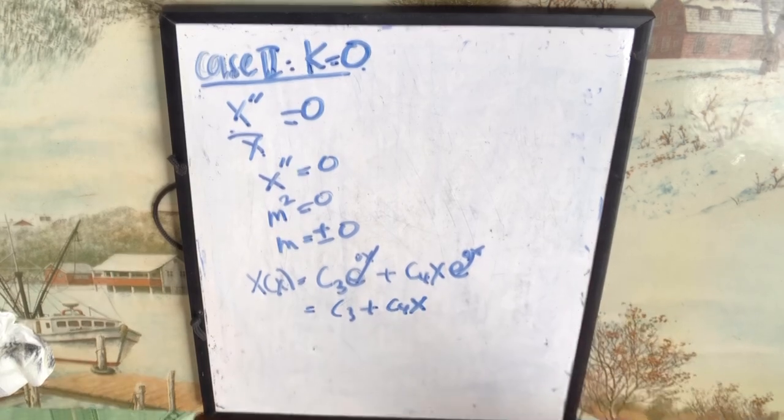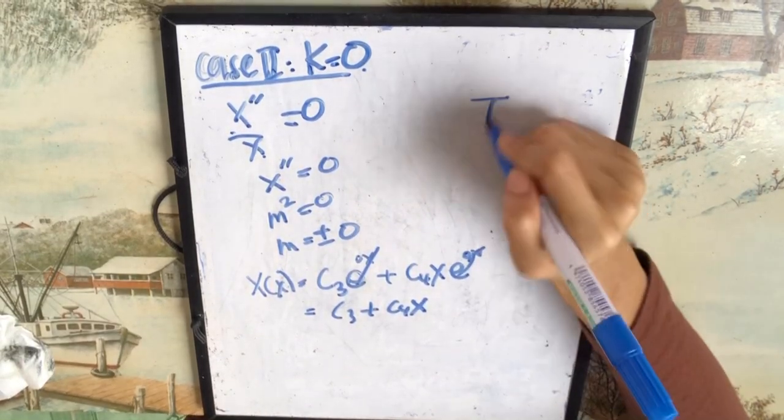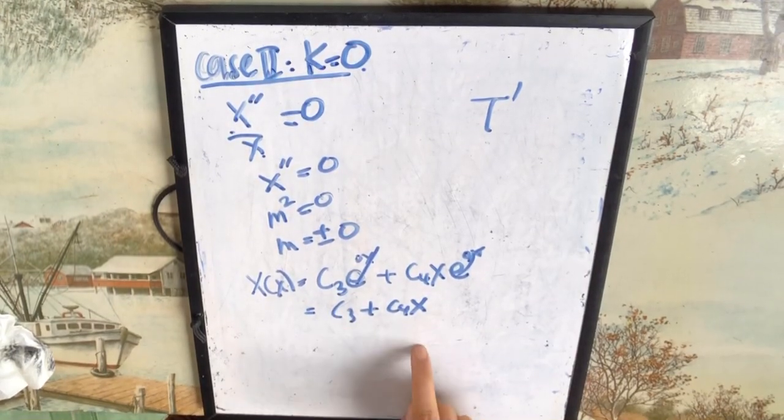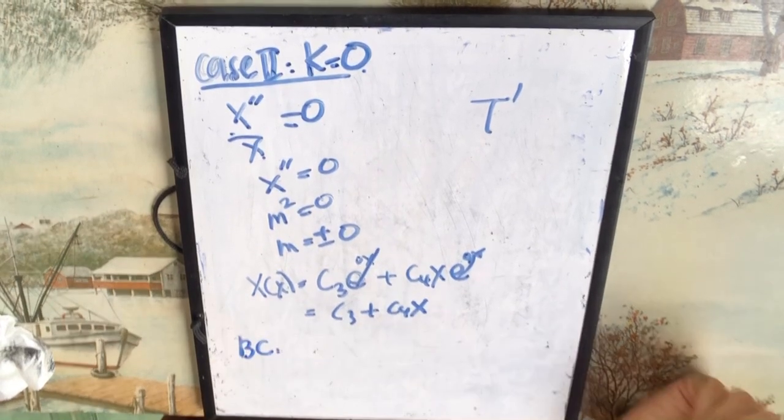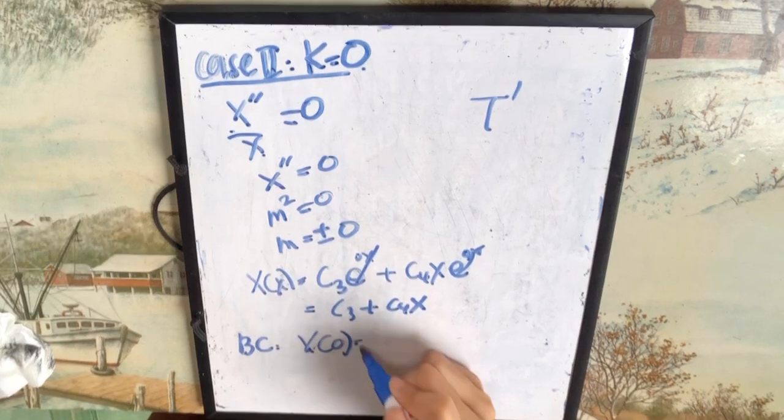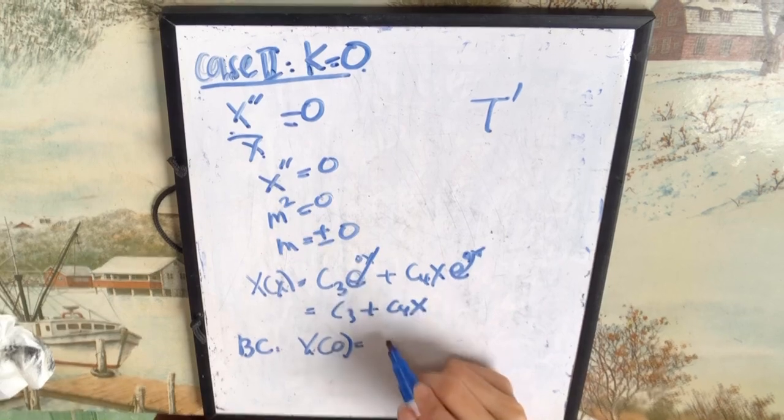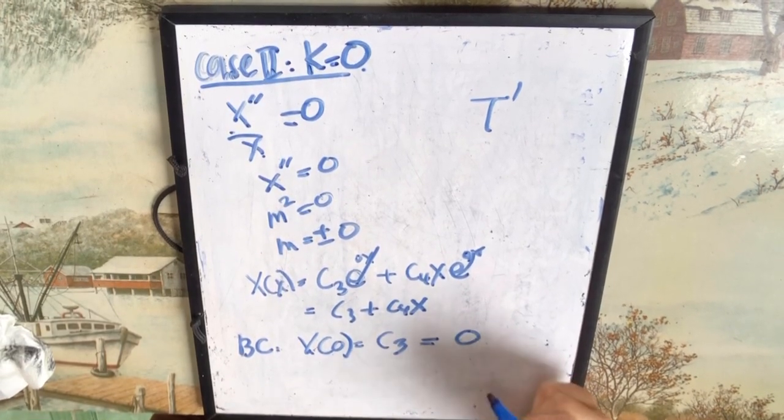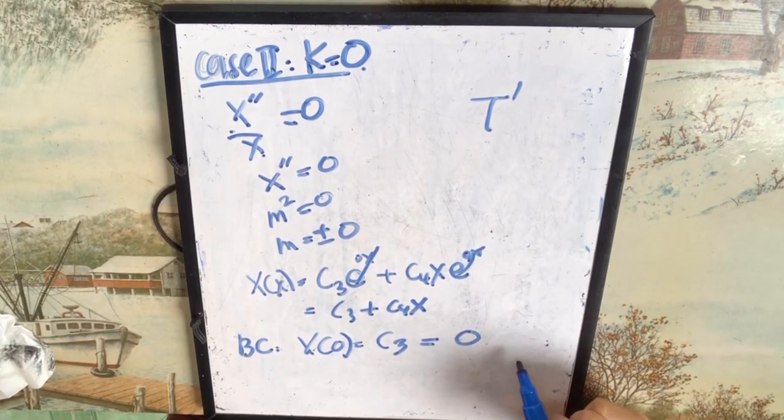Okay, then like I said, before we proceed to the t equation, we need to find out the value for c3, c4 first by using the boundary condition. So the first boundary condition is at 0. At 0, so it means that you substitute 0 into x. So you have only c3 and the boundary condition is equal to 0. So you already get a value for c3 is equal to 0.